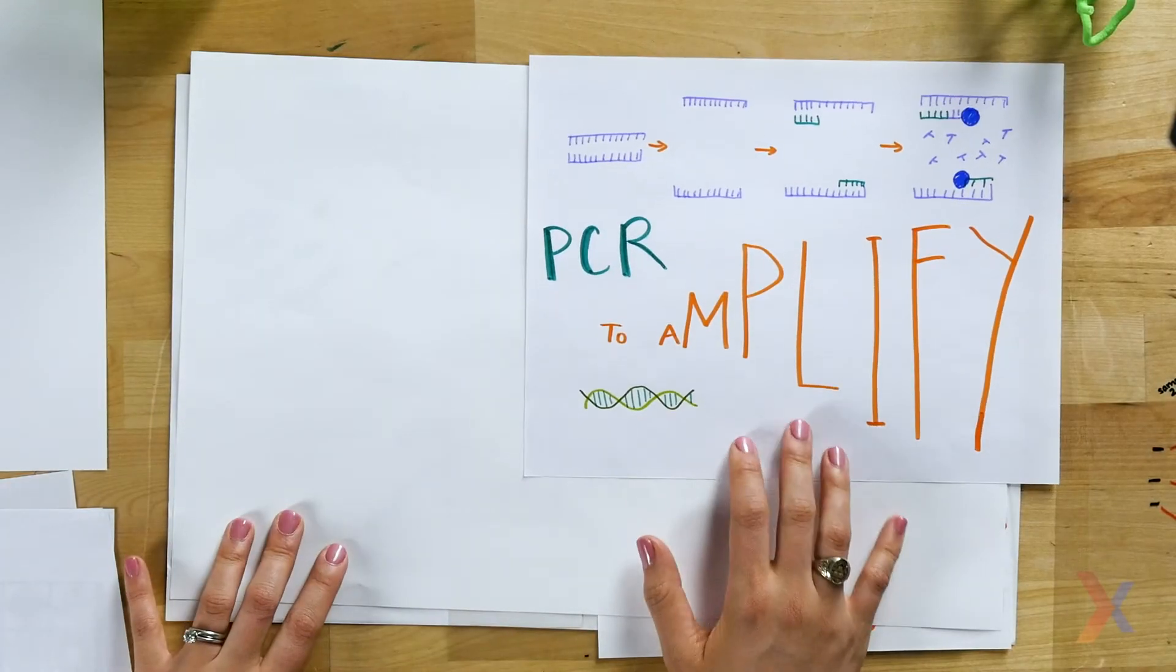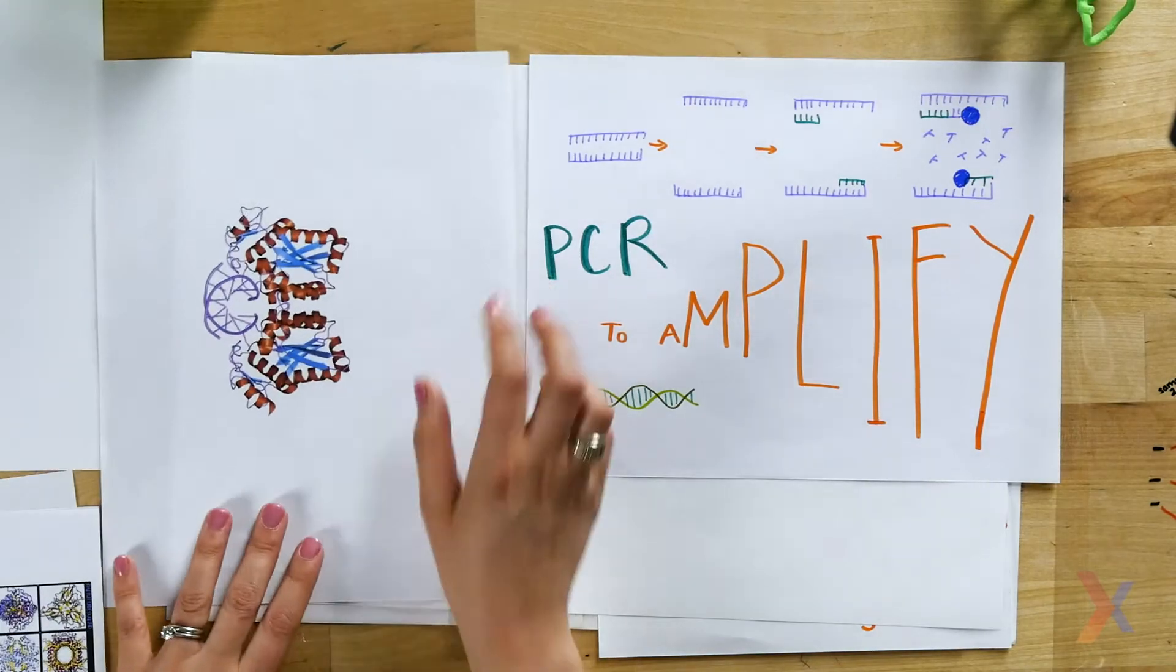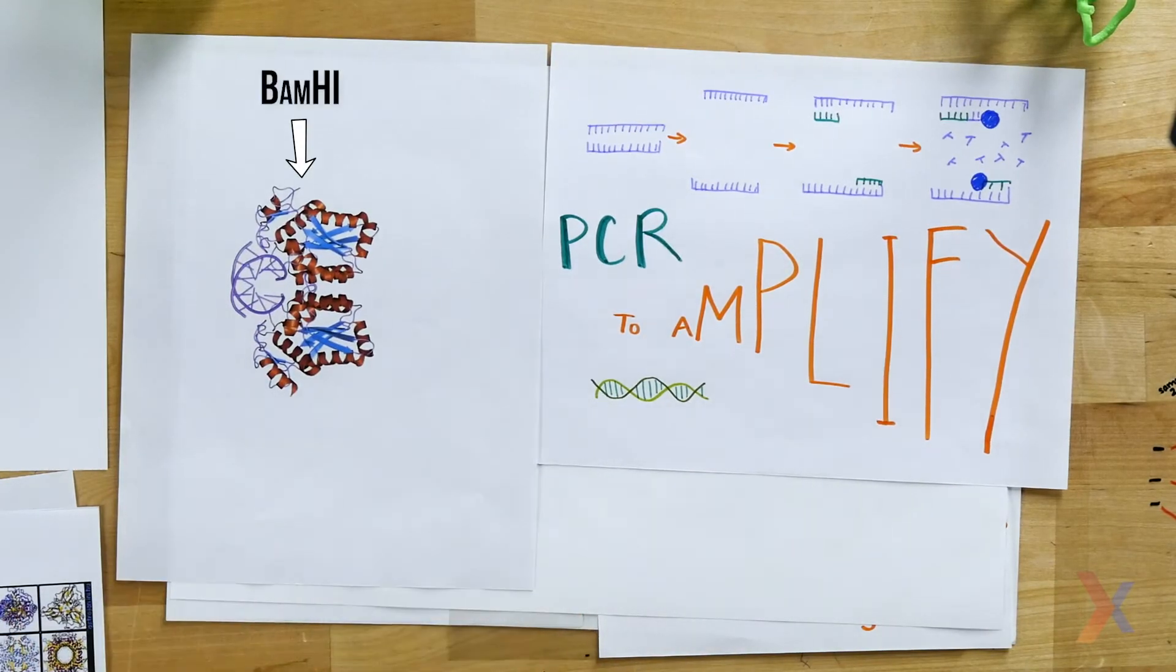Some ways you can analyze DNA include amplifying regions of DNA that you're interested in using PCR, or you could use restriction enzymes to cut up the DNA where there are sequence differences. What gel electrophoresis will actually show you is differences in fragment sizes.